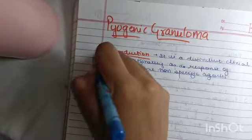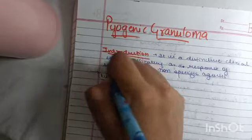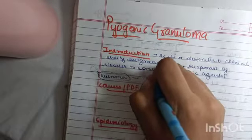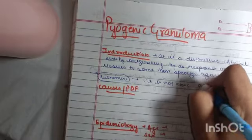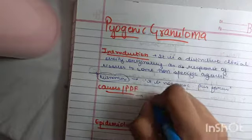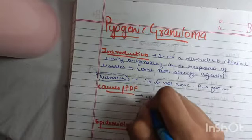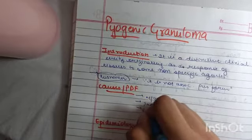Now the name pyogenic granuloma is absolutely a misnomer. Why is it a misnomer? Because it is not associated with pus formation. Now coming on to the causes, either it is due to some microorganisms or it is due to trauma or due to poor oral hygiene.